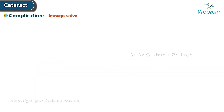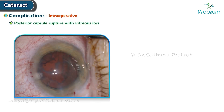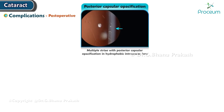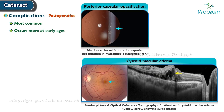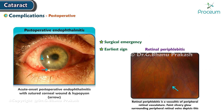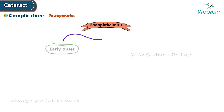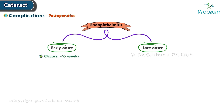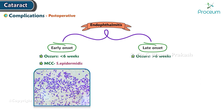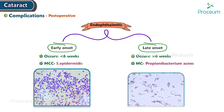Complications: the intraoperative complication is posterior capsule rupture with vitreous loss. Postoperative complications include posterior capsular opacification — the most common complication, occurring more at early ages — and cystoid macular edema, the most common cause of vision loss after cataract surgery. Postoperative endophthalmitis is a surgical emergency; the earliest sign is retinal periphlebitis. Early onset (less than 6 weeks) is most commonly caused by Staphylococcus epidermidis; late onset (after 6 weeks) is caused by Propionibacterium acnes.